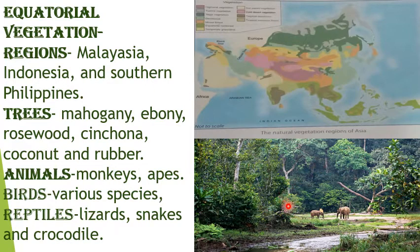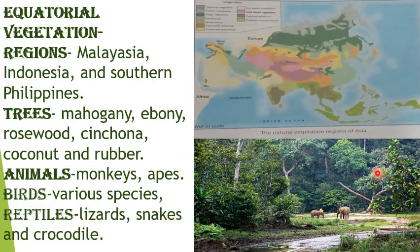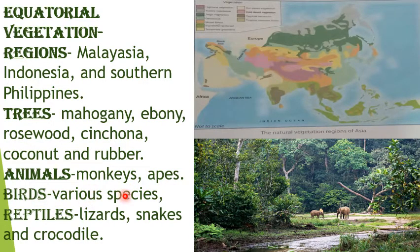In this forest region, the trees are of different heights — they represent multi-storey buildings, with at least three storeys visible. Animals such as monkeys and apes, birds of various species, and reptiles like lizards, snakes and crocodiles are found here.